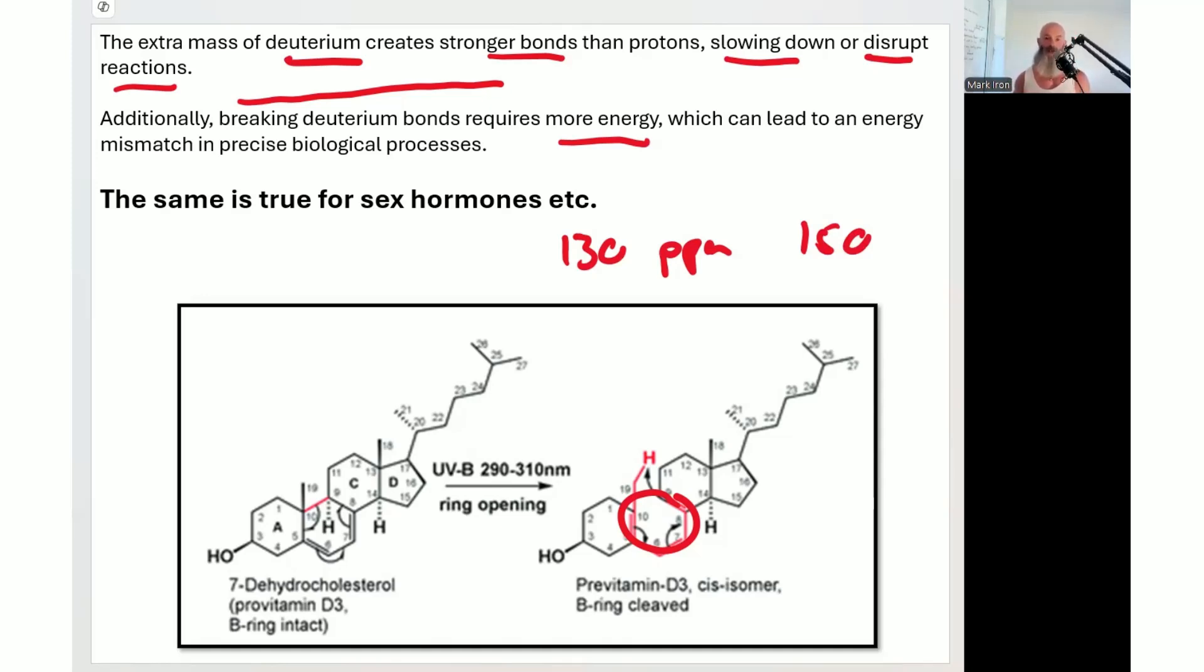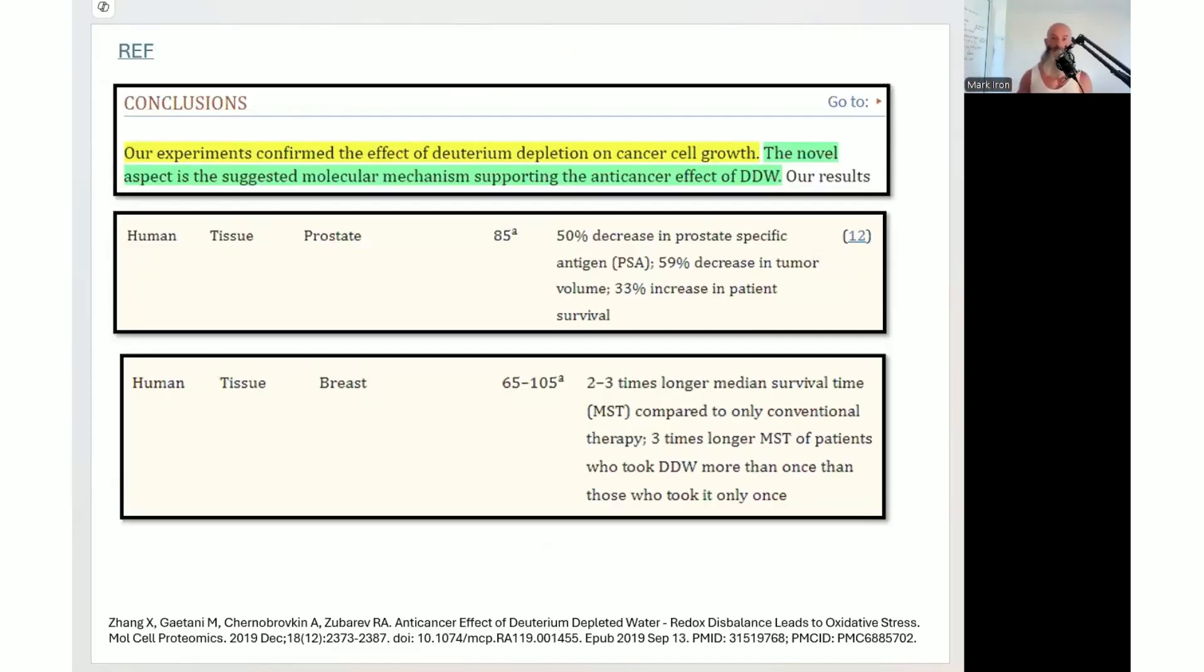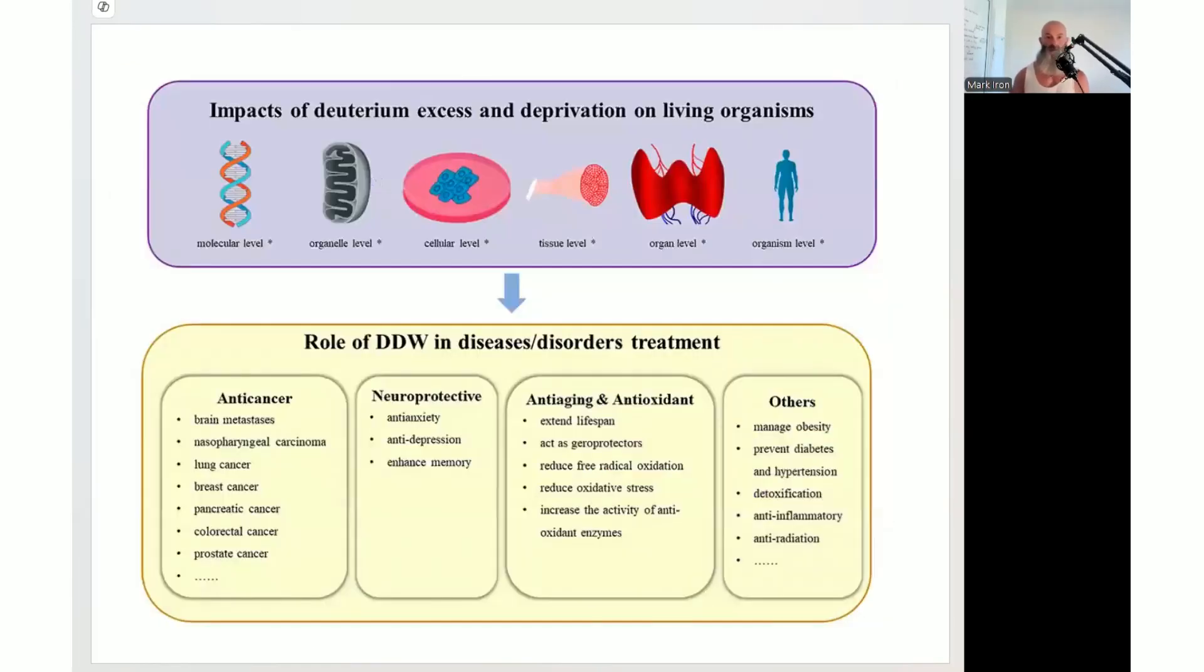It's not like the scientists aren't speaking about this, it's kind of being buried. If you follow the money, you know where this research is being buried. Here's just one: a low deuterium depletion, prostate cancer, 50% decrease in prostate-specific antigen, 59% decrease in tumor volume, 33% increase in patient survival. Same is true with breast cancer. Here's a bit more research on deuterium.